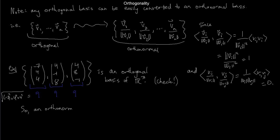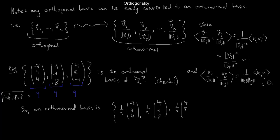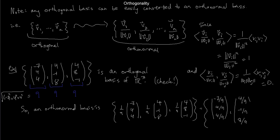So all of these have length 9. To get an orthonormal basis, take each vector and divide by 9: (1/9)(-7, 4, 4), (1/9)(4, -1, 8), and (1/9)(4, 8, -1). We'll see shortly that those vectors being orthogonal and there being three of them is enough to guarantee they form a basis of R³ — a very useful fact that will come in handy many times this semester.